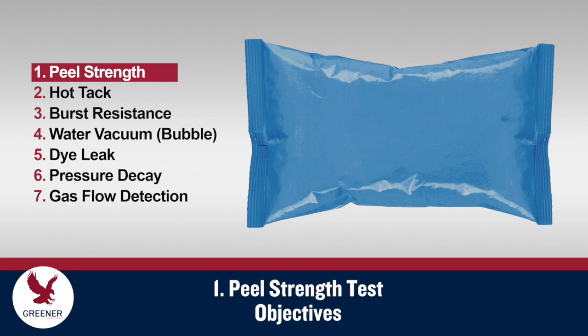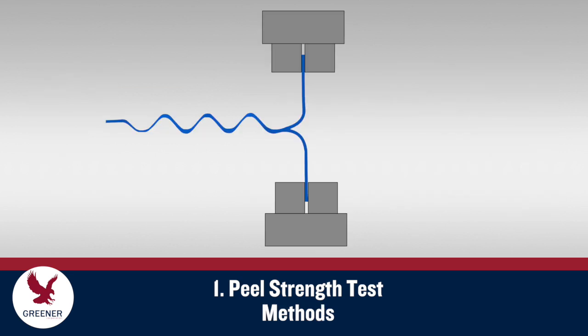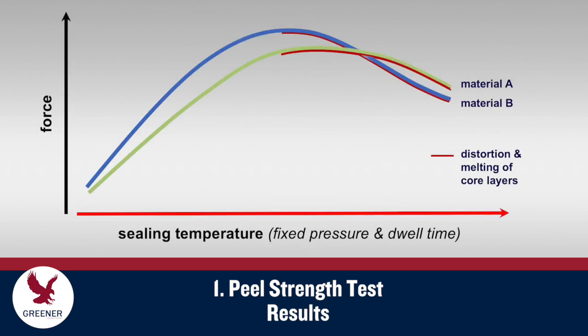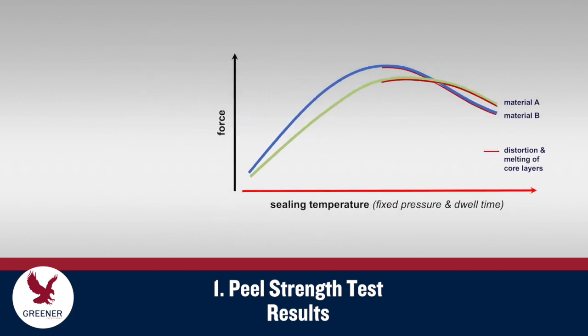Peel strength tests measure seal strength — the ability of a package to remain sealed when subject to tension. Seals are produced on a lab sealer at a series of different temperatures, with pressure and dwell time remaining constant. A testing device measures the force required to peel each seal apart. The force required to peel a unit width of seal is correlated with sealing temperature, to compare the seal strength of one packaging material against another, or against historical data.